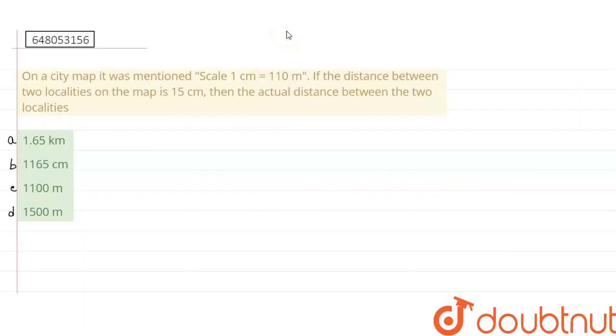Hello friends, let's see what's been said in this question. On a city map, it was mentioned that the scale 1 cm is equal to 110 m. If the distance between two localities on the map is 15 cm, then the actual distance between the two localities.